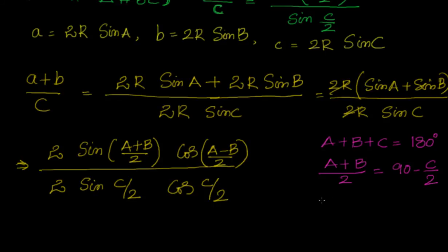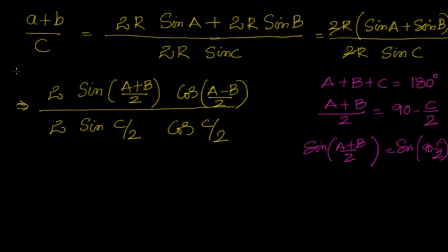Let's look at that. So I have sin((A+B)/2) equals sin(90 - C/2), which is cos(C/2). So I can go ahead and write it here. 2, 2 cancels.